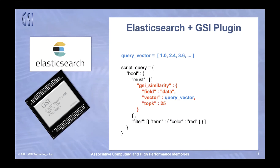You remember the JSON that George showed you — Elasticsearch has its syntax for making a call to the cosine similarity function. Here we have a similar, even simpler syntax. Our query is called GSI similarity. You provide it the dense vector field name — by the way, it's the same dense vector field type. If you've already indexed using the dense vector data type that Elasticsearch provides out of the box, then you can use it. You provide the vector itself and the top K, which is optional. You apply the search and get results in the same format.